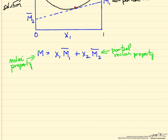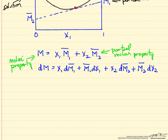Next we take a differential of both sides of this equation. Using the product rule we get two terms: first holding x1 constant and taking the differential of the partial molar property, then holding the partial molar property constant and taking the differential of x1. It turns out this simplifies because certain terms, when added together, equal zero — a result of the Gibbs-Duhem equation.